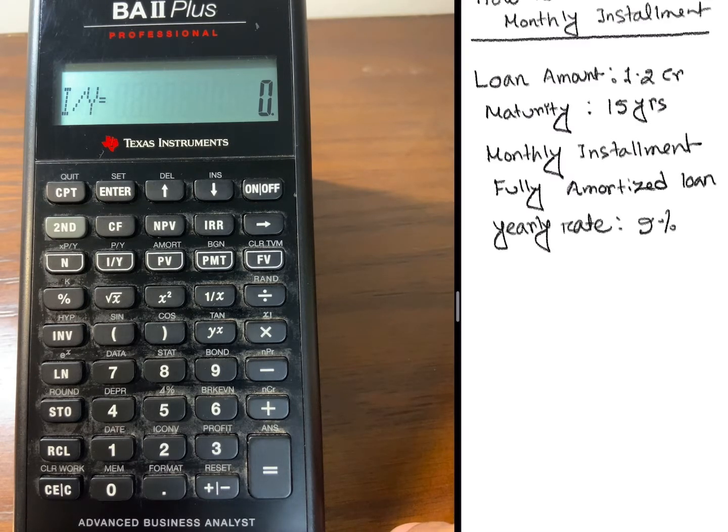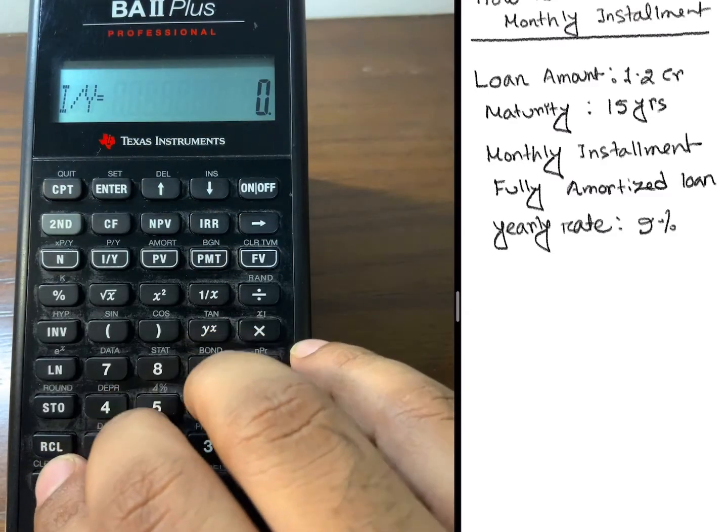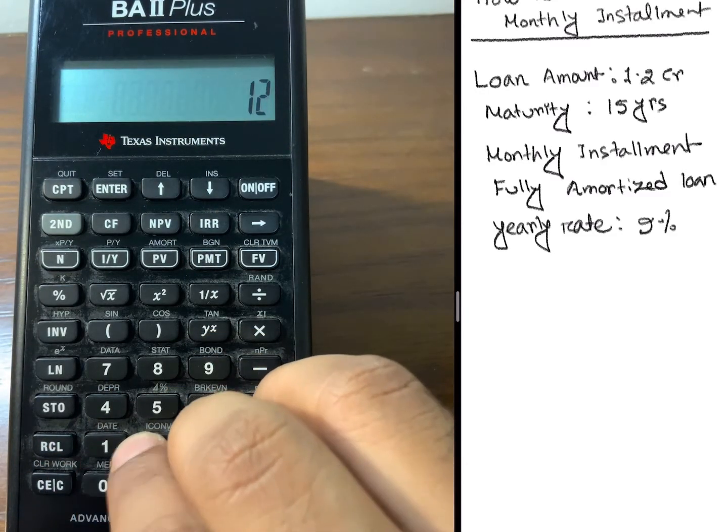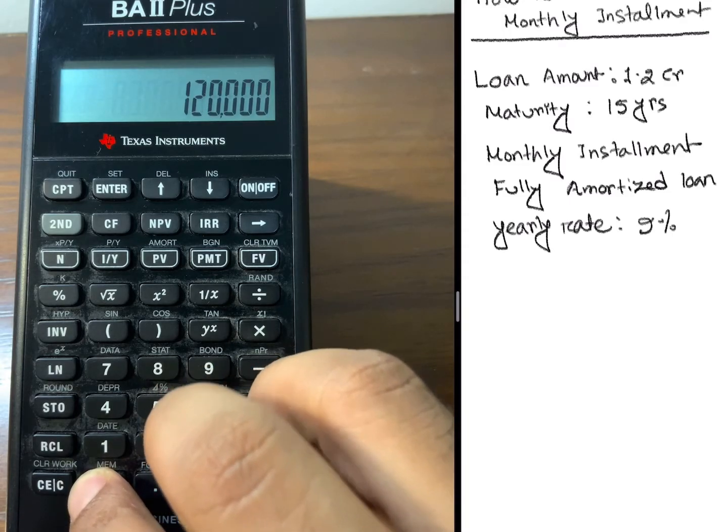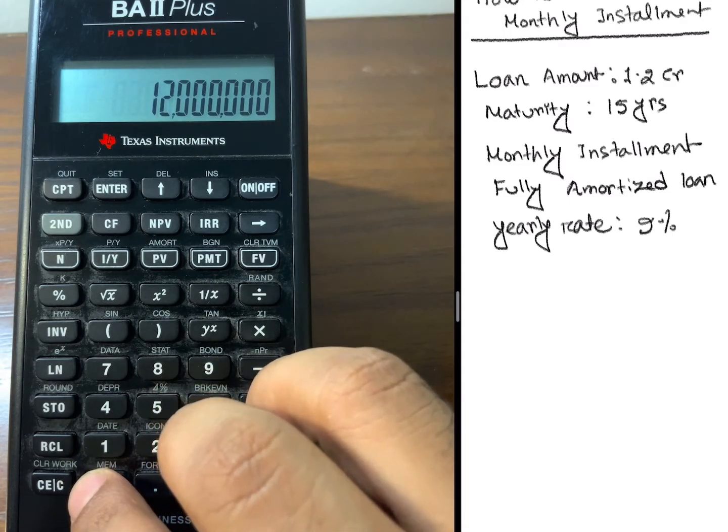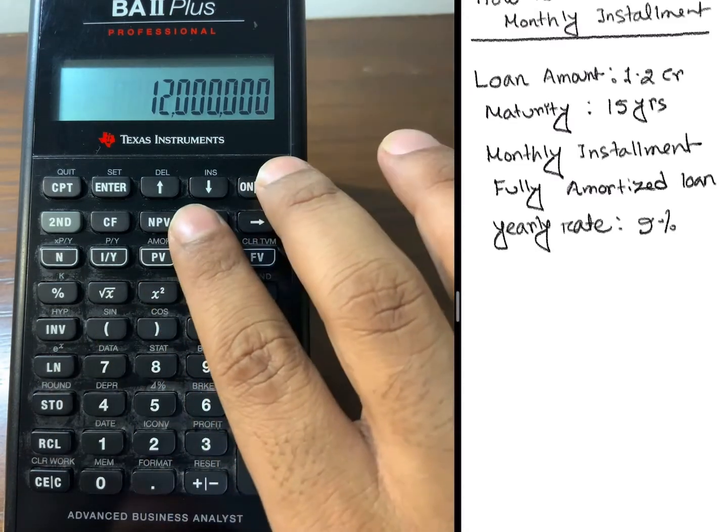Now I need to give the input into the time value of money. For example, the loan amount is 1.2 crore. So here it's 12 million. This is 1.2 crore. I'll first type 1.2 crore and then press PV.